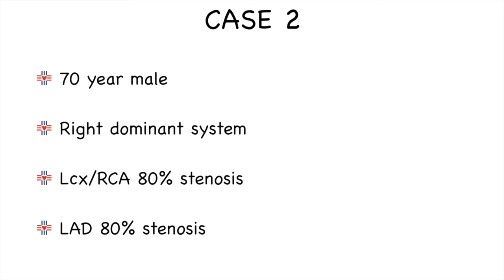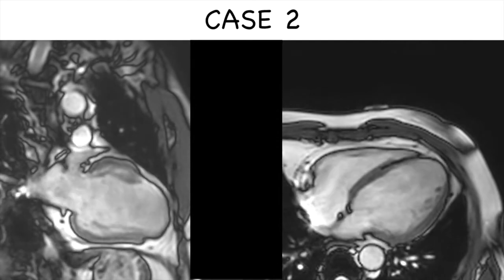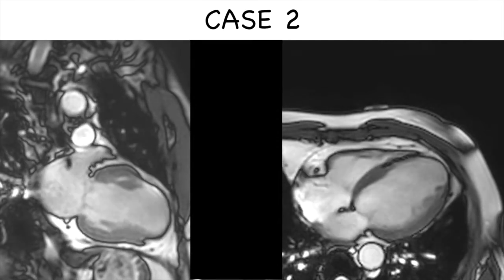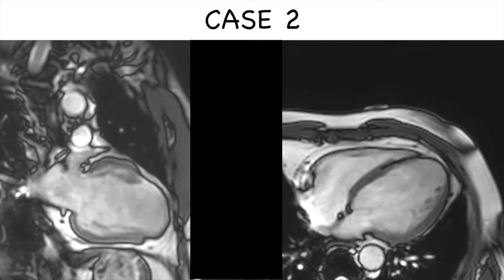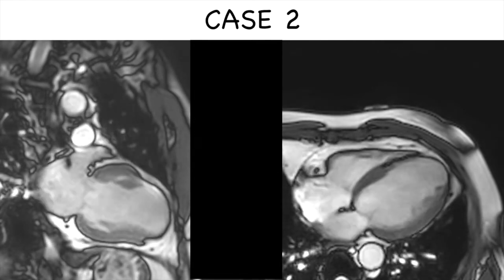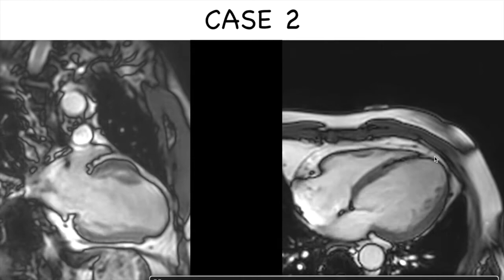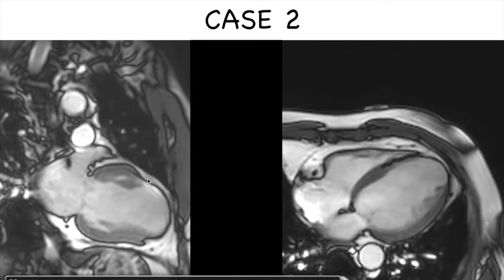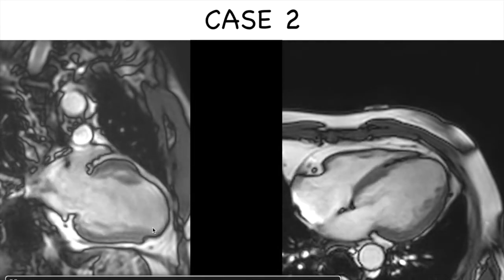Case number two: a 70-year-old man with a right dominant system. All three vessels have disease with up to 80% stenosis, and the question is to assess viability. On two-chamber and four-chamber cine views, the right ventricle is functioning well with very minimal mitral regurgitation. What is obvious is that the apex is akinetic and thinned out. The apical anterior segment is also thinned and akinetic. However, the inferior segments seem to be working very well.